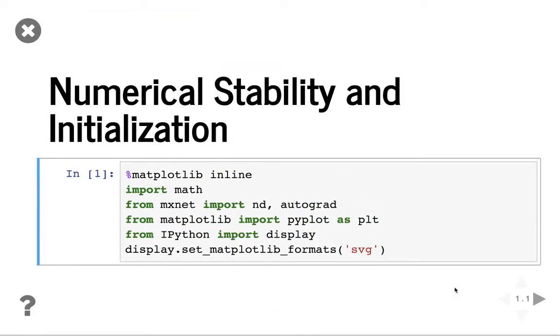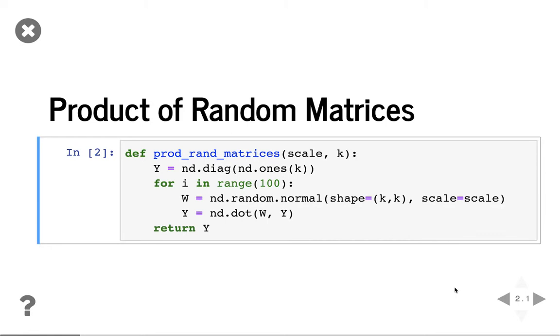So far, we talked about multiple methods to make the numerical stability. Now let's look at some results to verify these methods. We first import msnet and other libraries to plot figures. The first experiments we're going to do here, we're going to generate a bunch of random matrices and do the multiplication.